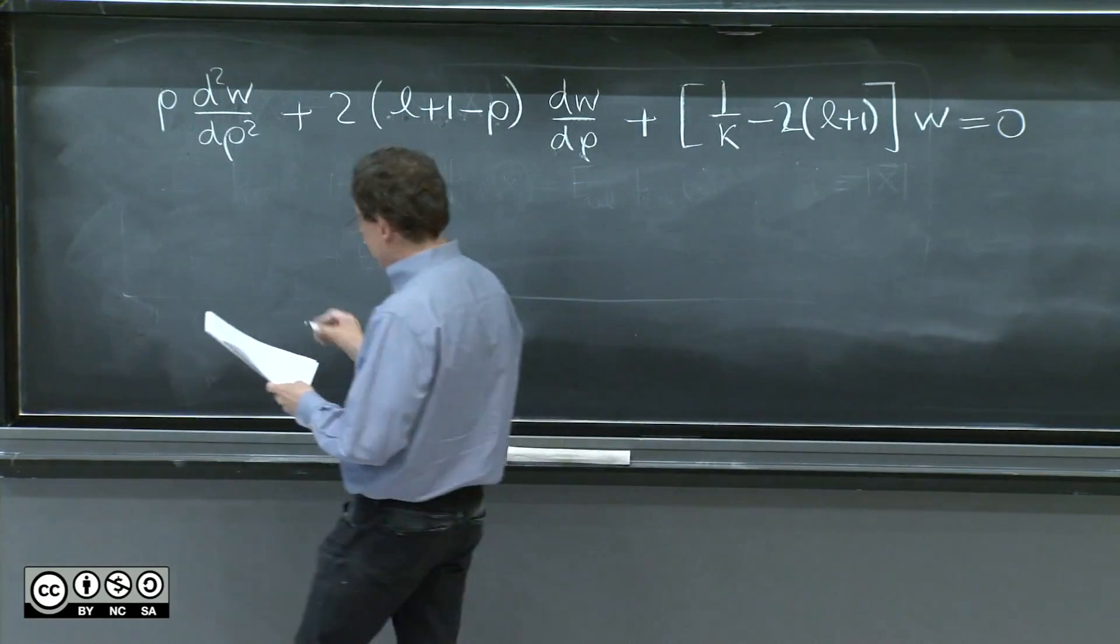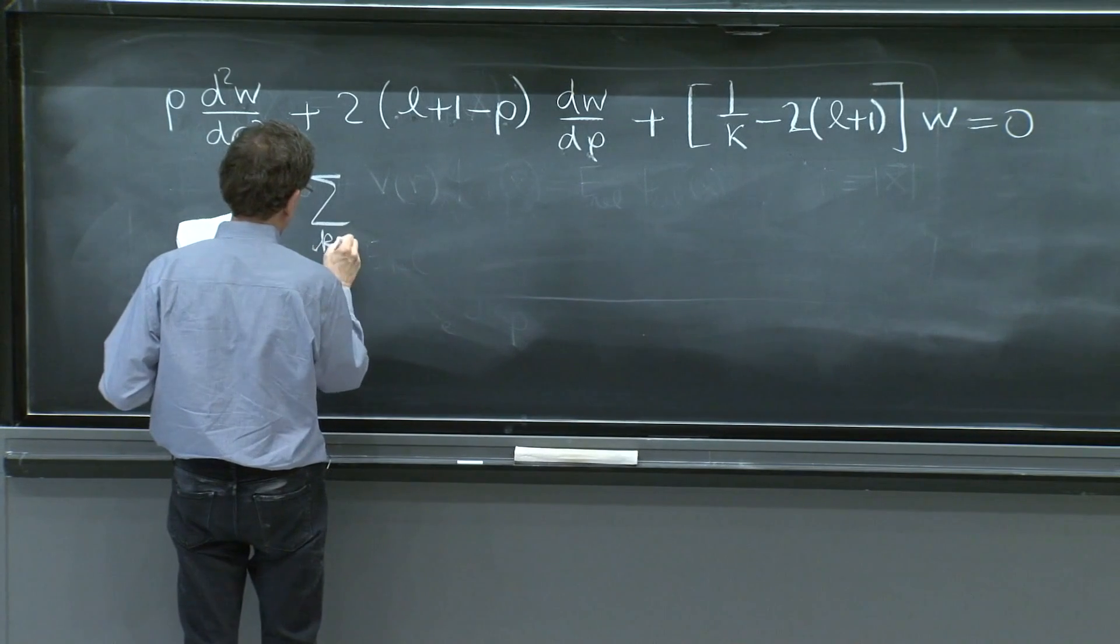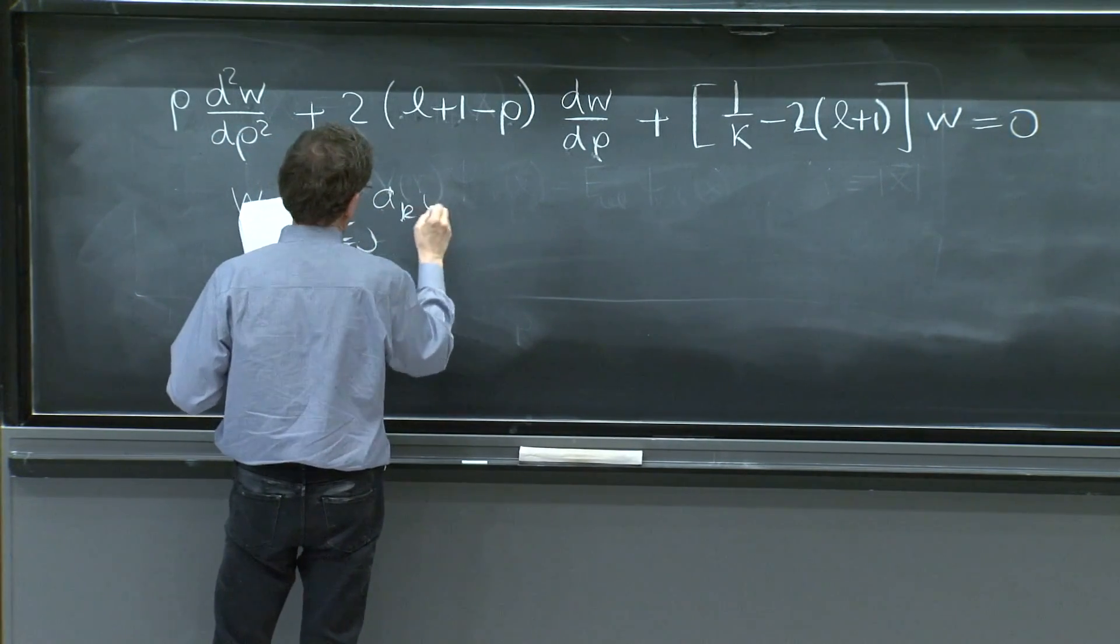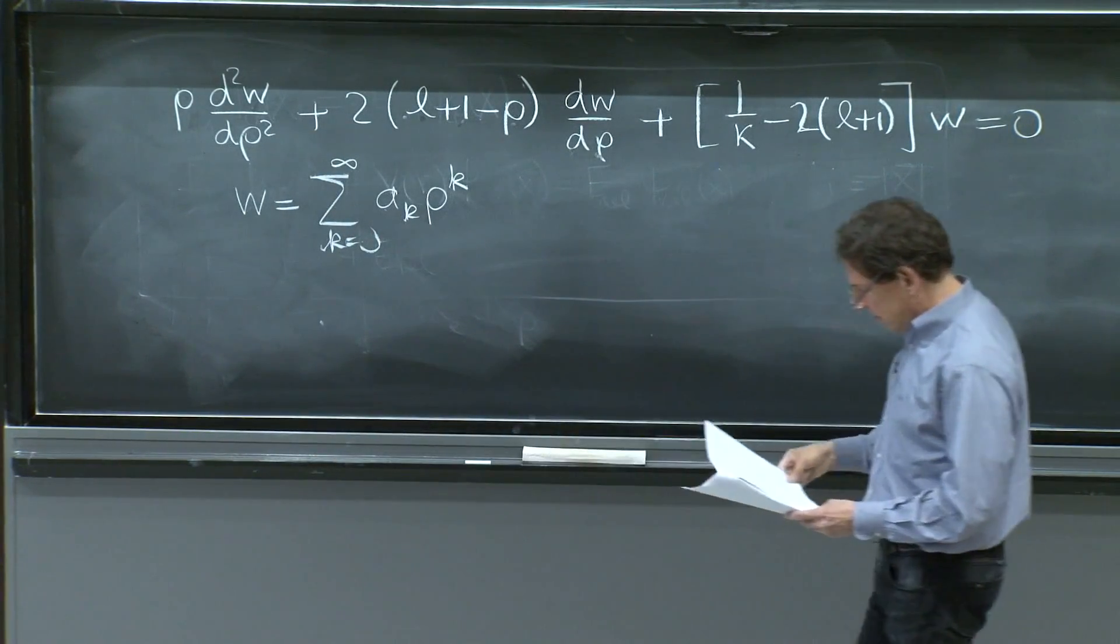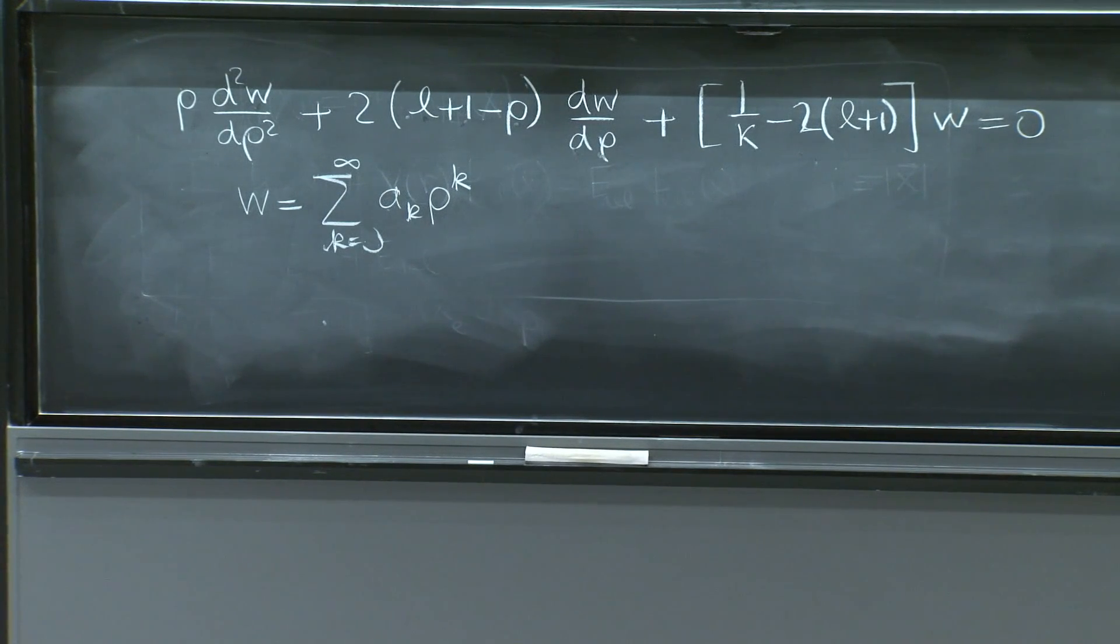We write w equals sum from k equals 0 to infinity, ak rho to the k. And plug in.